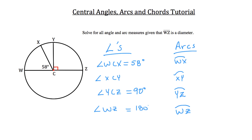Now you can also write W, Z — that angle — as angle W, C, Z. So now let's go back and solve for that missing angle, angle X, C, Y. Now if this is 90 degrees here and this is 58 degrees...